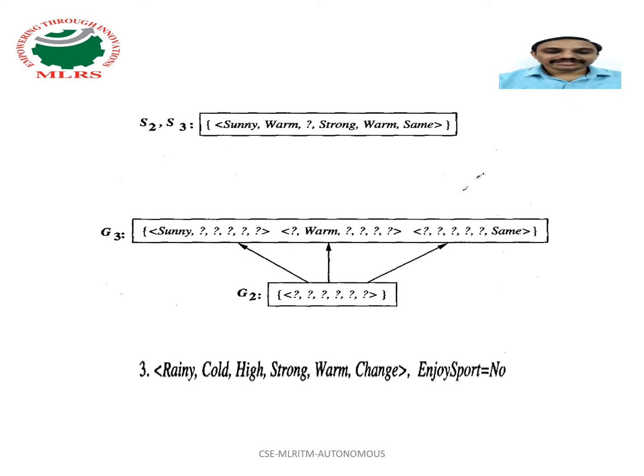This revised boundary is shown in G3. G3 contains three hypotheses. Why only three hypotheses are used here? Why not six? We have six attributes. Why did we not use six? Why only three?